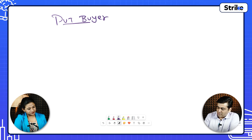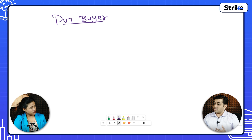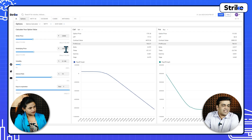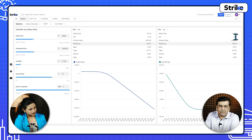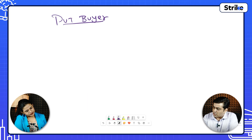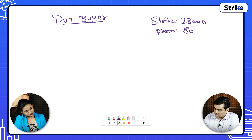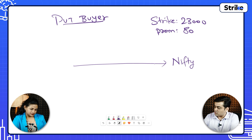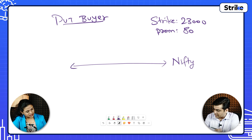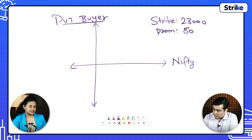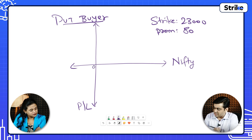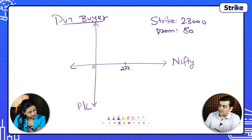Put buyers. When will a trader buy a put? When the market is going down — when the market is in bearish mode. Let's suppose a person expects the market to go down below 23,000. He buys a put at a price of 82 rupees — I'll round it off to 80. So strike price is 23,000 and premium is 80 rupees. The horizontal x-axis represents Nifty prices — Nifty going up on the right, Nifty going down on the left. The y-axis is profit and loss, with the center being no profit, no loss. A put option buyer has limited loss and unlimited profit.